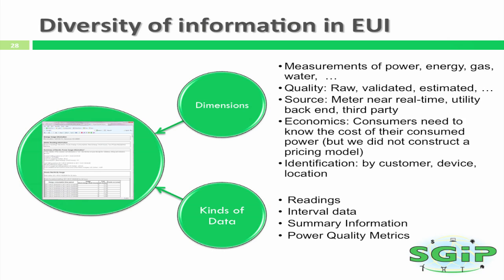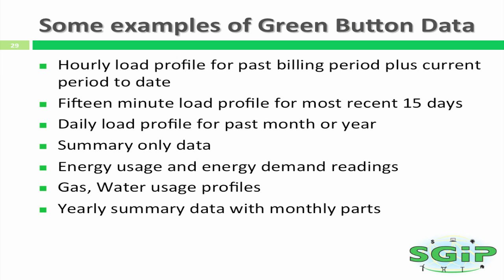Consumers need to know the cost of their usage. Within the energy usage information, we treated cost at a summary level — we associated a cost with an interval and did not get into the details of the pricing model, which is being done in other places. Some examples of GreenButton data range from hourly load profile data to 15-minute interval data to your simple monthly bill — the energy usage from billing data. You do not have to have a smart meter to get access to GreenButton data. If you have a smart meter, that more detailed data in 15-minute or hourly increments can be very valuable for decision-making. All of these different types of information are supported by GreenButton.